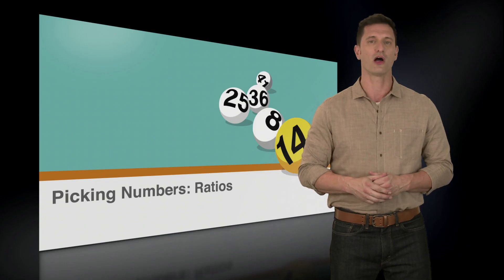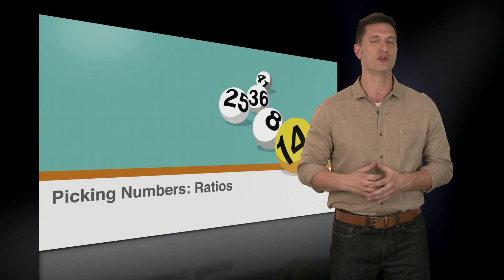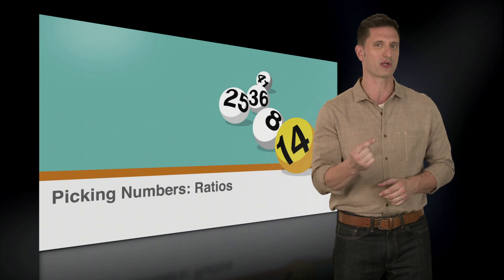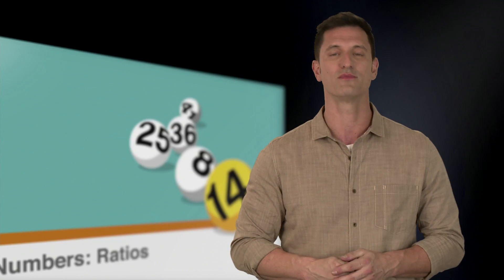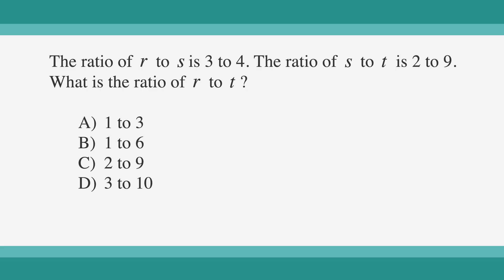Remember, a ratio is written to show the relative size of two numbers. Because of that, we can assume each value to have a specific weight. Let's check out what this would look like on the SAT. Our example problem reads as follows: The ratio of r to s is 3 to 4. The ratio of s to t is 2 to 9. What is the ratio of r to t?